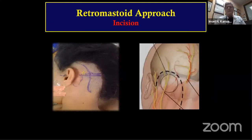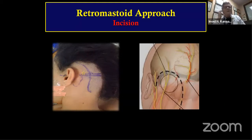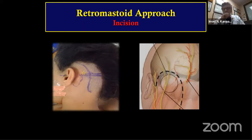Navigation systems have facilitated localization starting from the incision. For those without navigation, the gold standard is to follow the line from the ear along the zygoma arc, which marks the lateral sinus in most cases. The asterion is the junction between the lateral and sigmoid sinuses, so the burr hole is placed just below it.